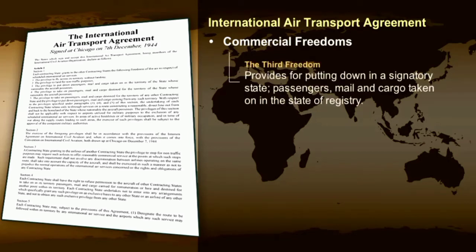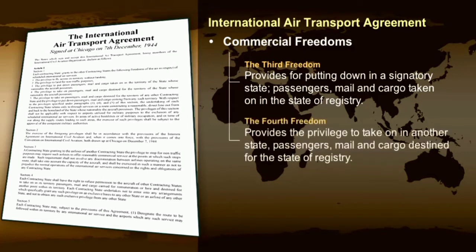The third freedom provides for putting down in a signatory state passengers, mail and cargo taken on in the state of registry. The fourth freedom provides the privilege to take on in one state passengers, mail and cargo destined for the state in which the airline is registered.